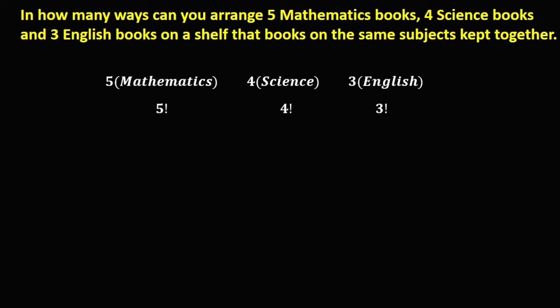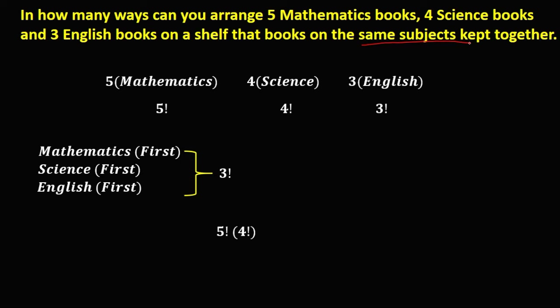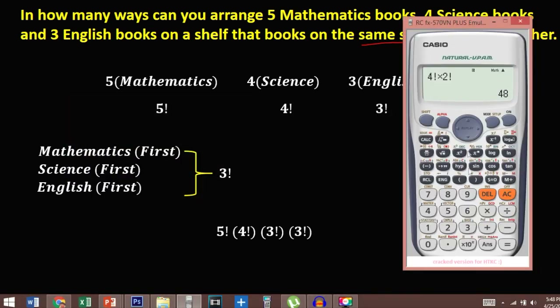Since books on the same subject keep together on the shelf, the three subject groups themselves can be arranged — mathematics first, or science first, or English first — giving us 3 factorial arrangements of the groups. So the total is 5 factorial times 4 factorial times 3 factorial times 3 factorial.